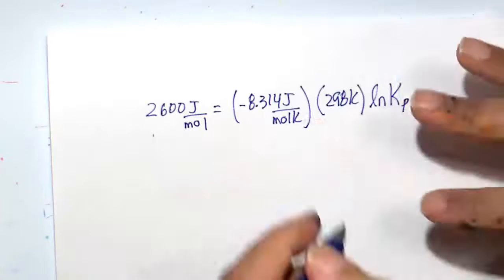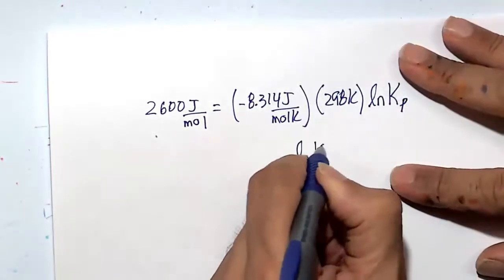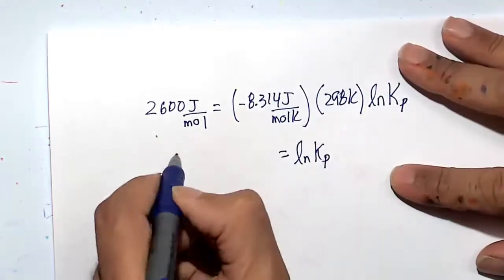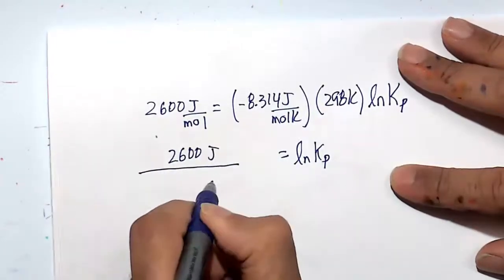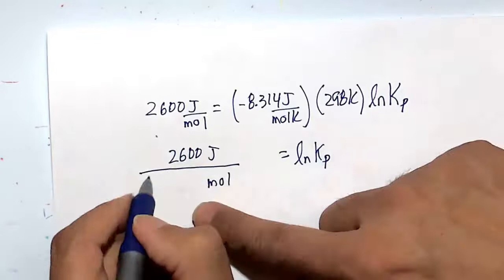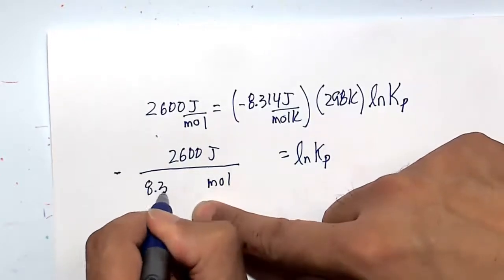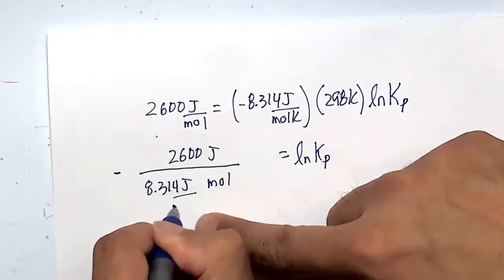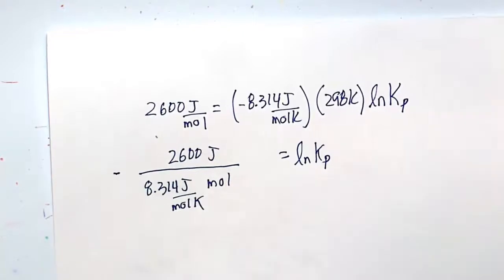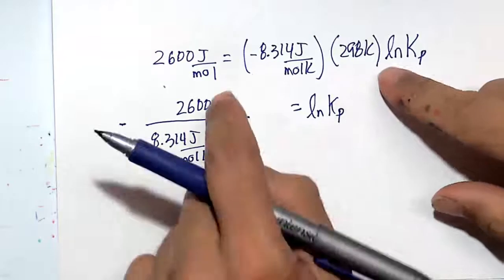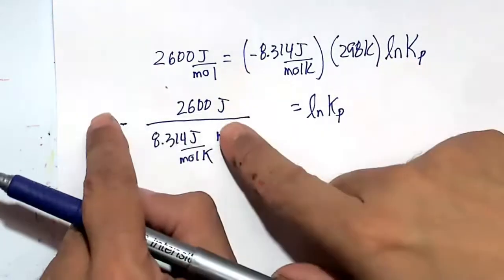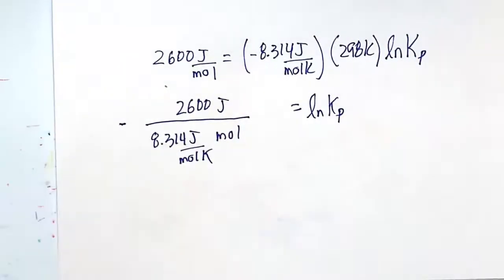Kp is what we're trying to solve for, so we'll do the natural log of Kp is equal to 2,600 joules over mole. Now K doesn't have any units, so really it's irrelevant that I'm writing out the units here, because K, our equilibrium constants, do not have units. So I just took all of this and divided it out, isolating my natural log of Kp.